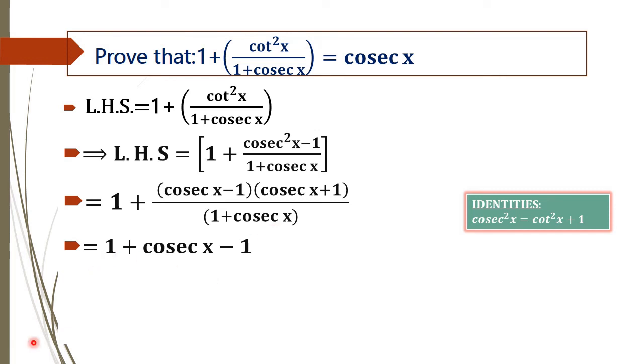By canceling once, we will get the right-hand side, that is cosec x.